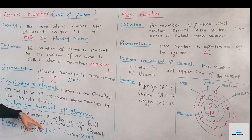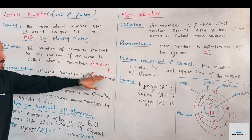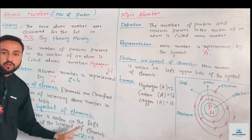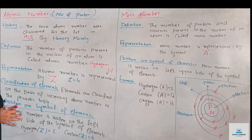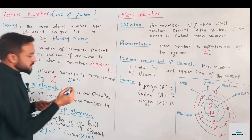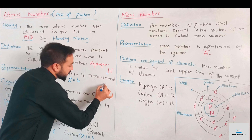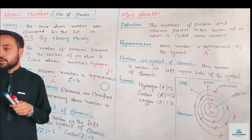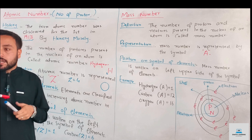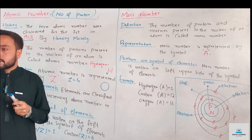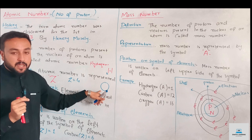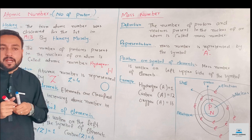The elements each have an atomic number written on the left side of the atom's symbol. For example, oxygen — the oxygen symbol is O, and when written, the atomic number appears with the symbol.